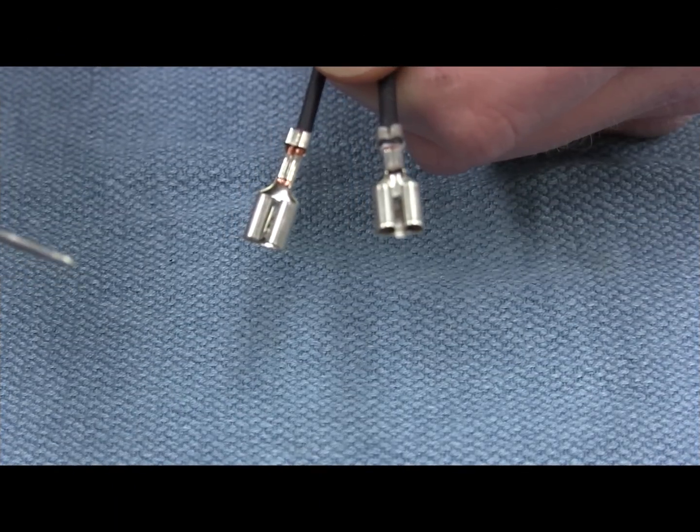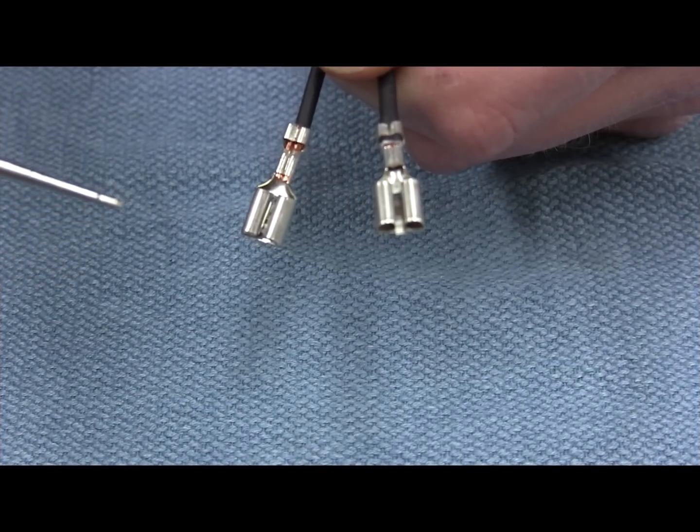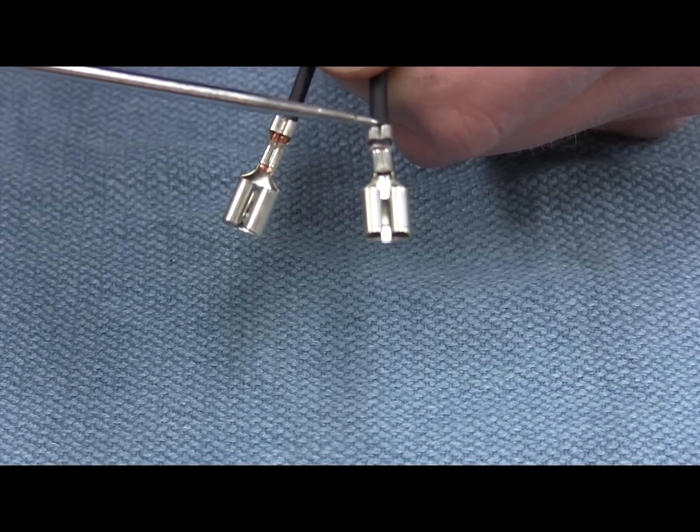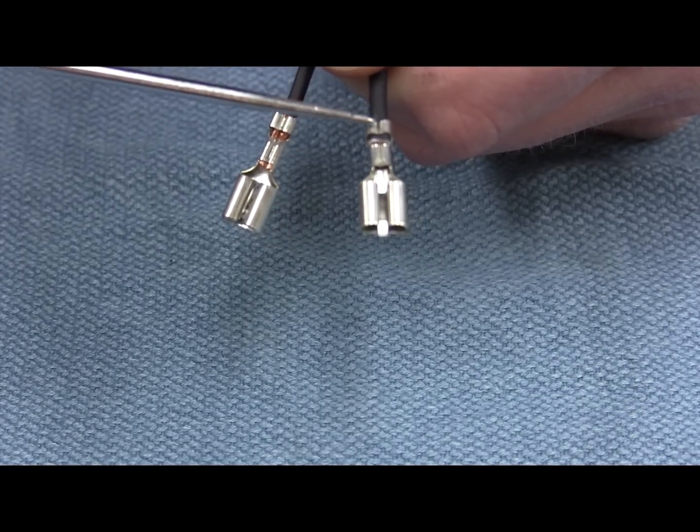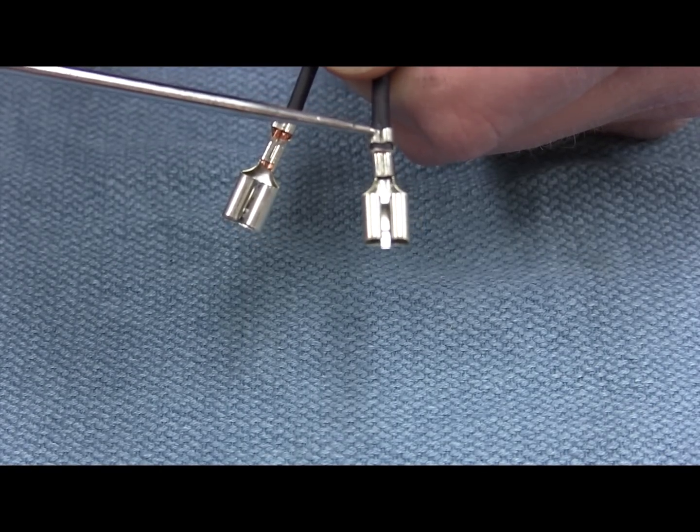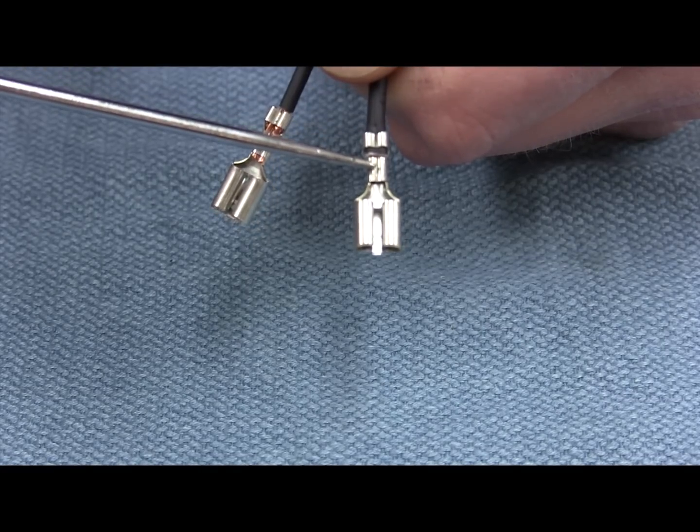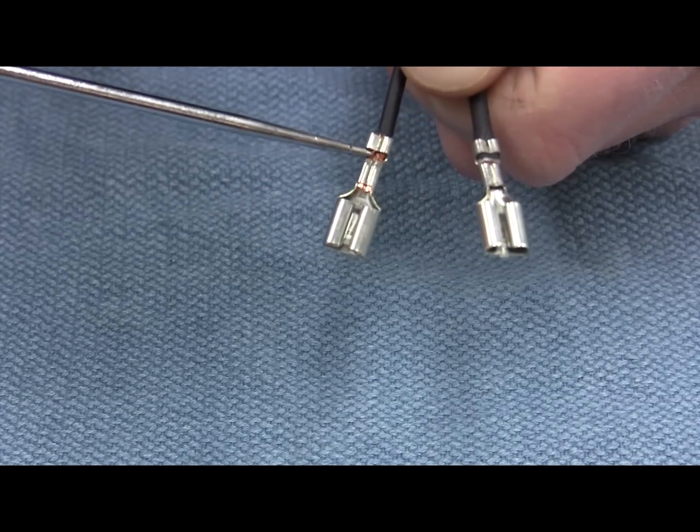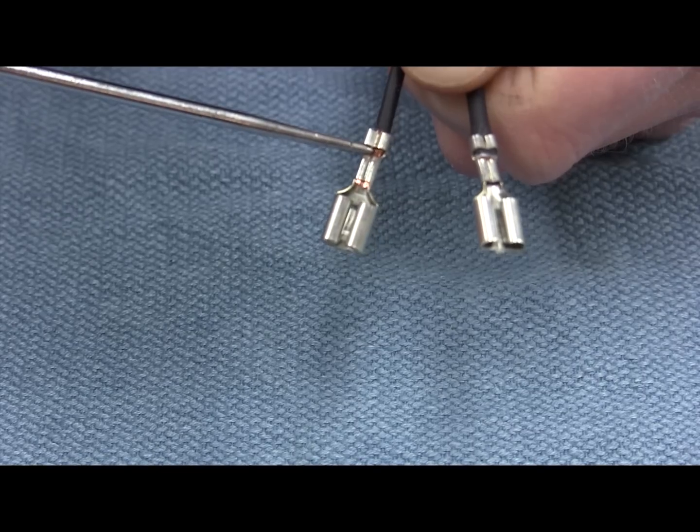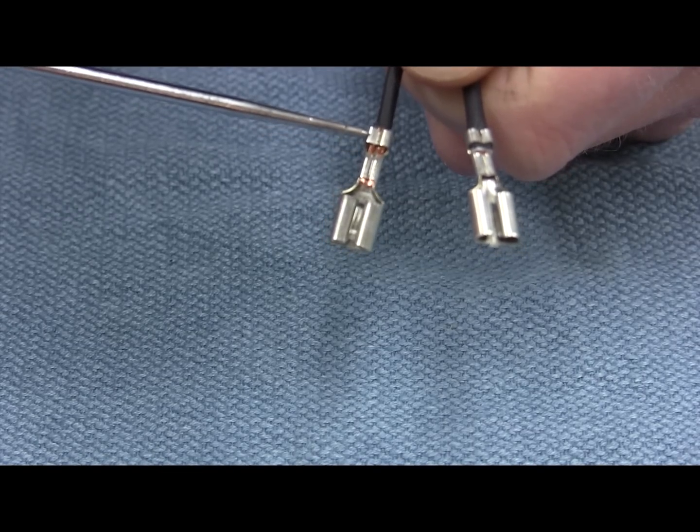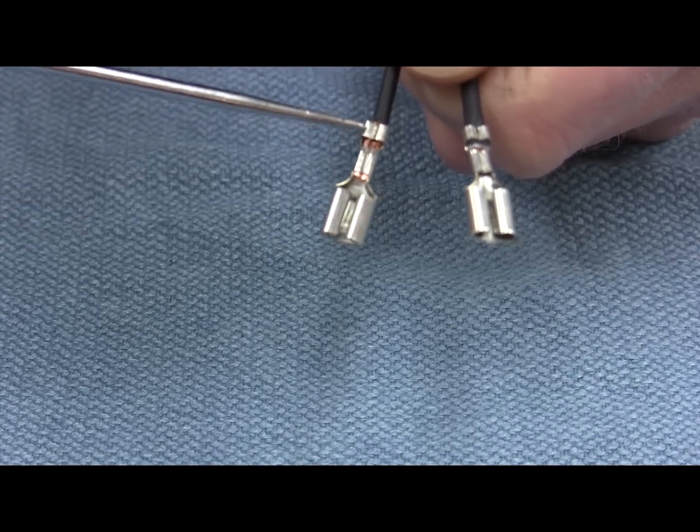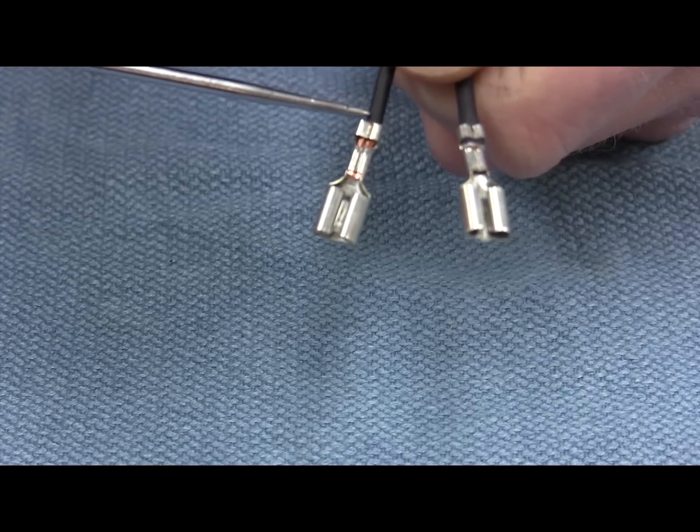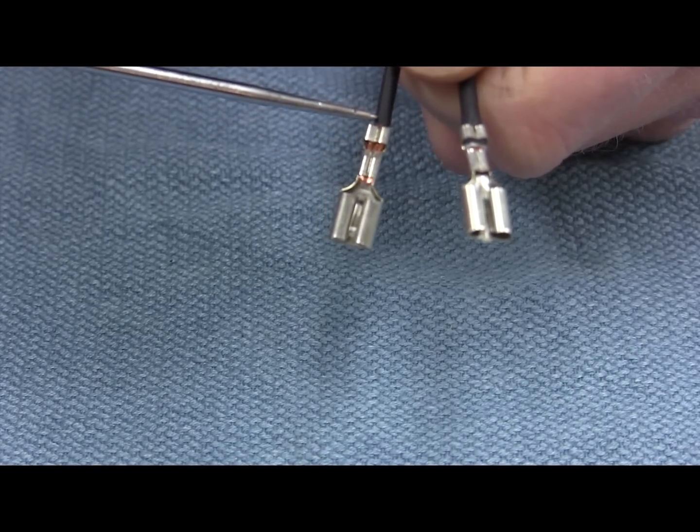Alright, I got a couple examples right here of a good crimp and a bad crimp. On this terminal, you can see that the long tabs of the terminal are crimped around the insulator of the wire. The short tabs are crimped around the wire itself. That's how you want to do it. This one right here, too much of the insulation was stripped back and now the long tabs of the terminal are crimped around the copper as well as the short tabs. There's nothing holding on to the insulator. That's what you want to avoid.